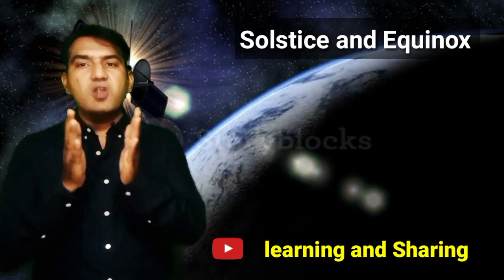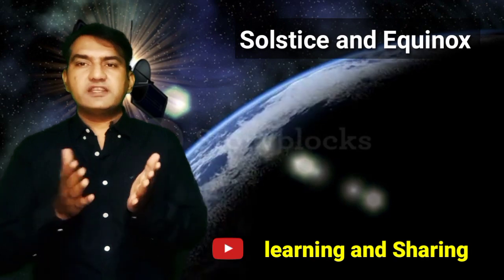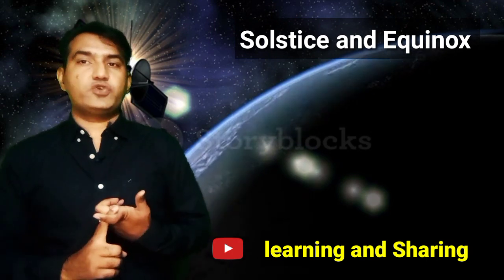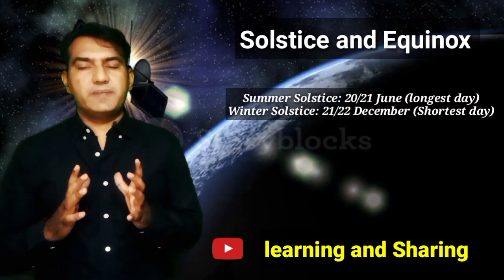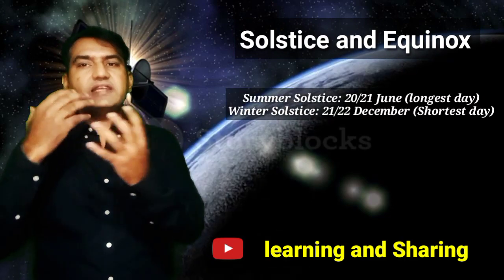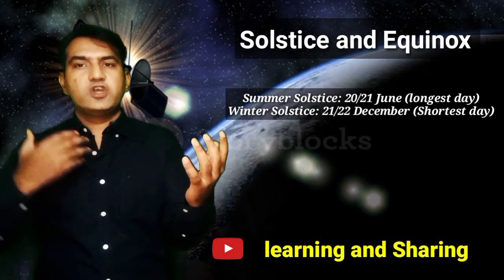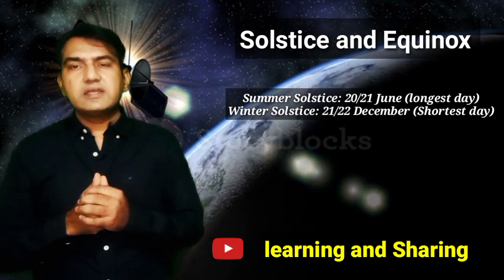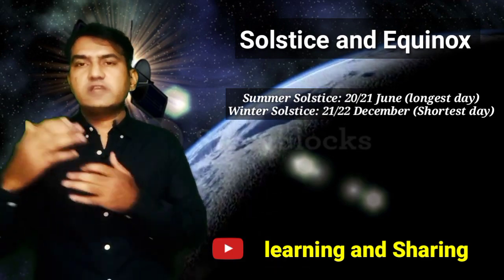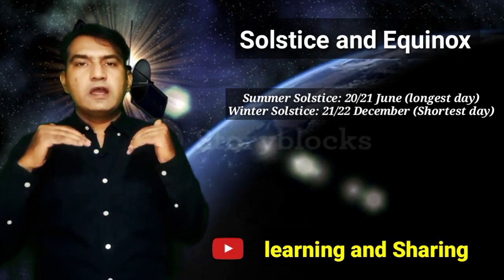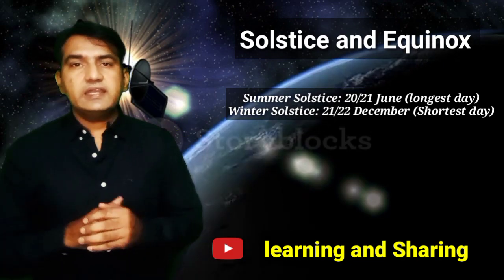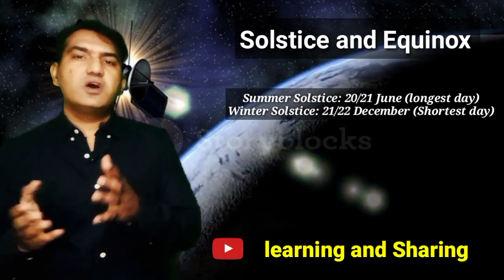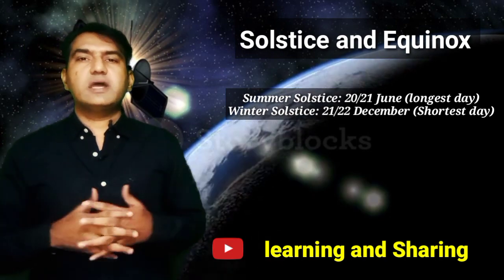Solstice is when we have the longest day and the shortest night, or the shortest day and the longest night. This happens twice a year — on 20th–21st June and 22nd December. It has a relation with the position of the sun and the earth. When the sun is close to the earth, one phenomenon occurs; when it is far away, another occurs. The 22nd December solstice is called the winter solstice, and the 21st June solstice is called the summer solstice.